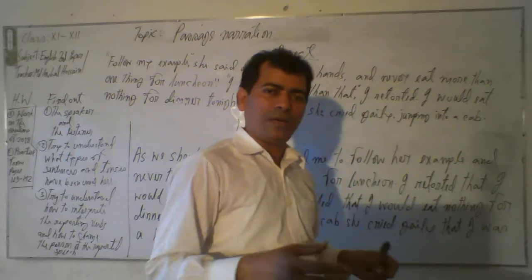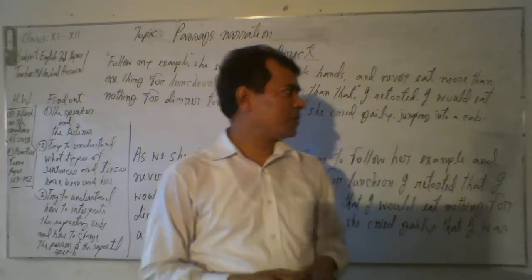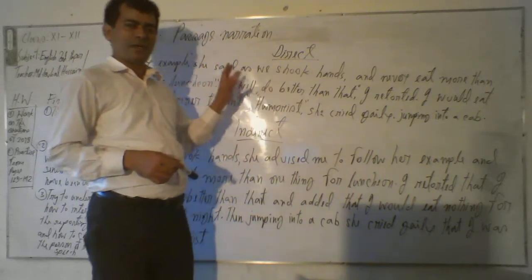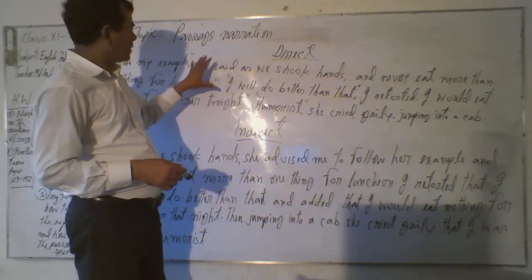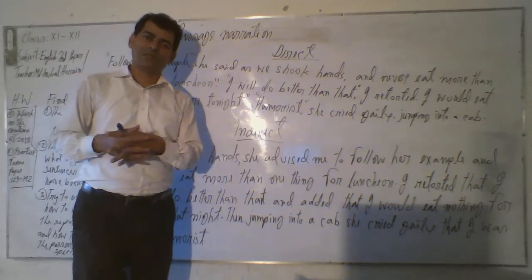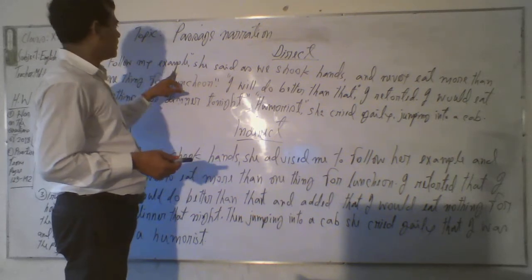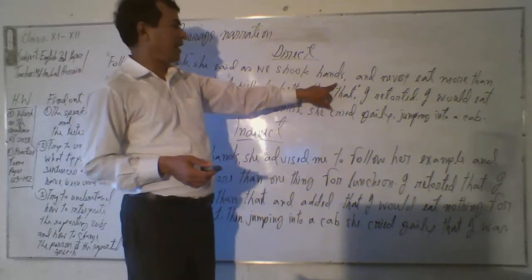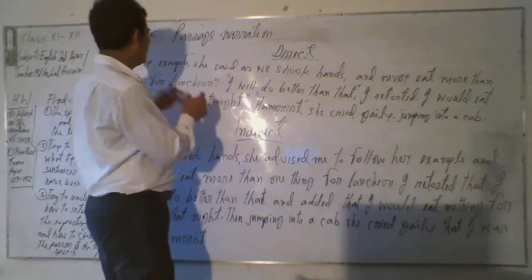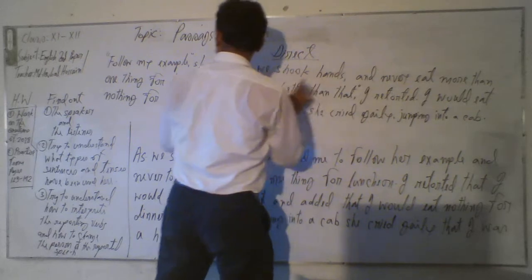Now let's see how to change a small speech, applying all these rules. This passage is about luncheon, which we already read in our classes. 'Follow my example,' she said, as we shook hands, 'and never eat more than one thing for luncheon.' This is in fact one sentence: 'Follow my example and never eat more than one thing for luncheon.'